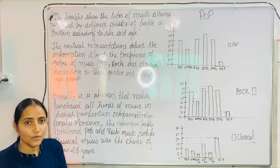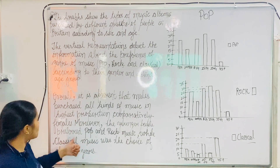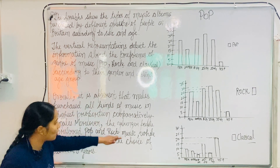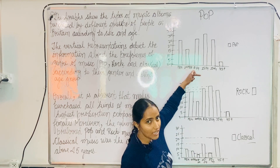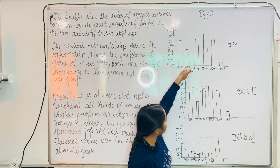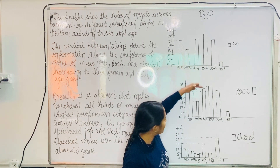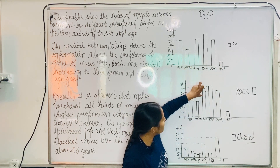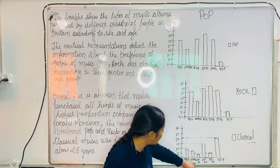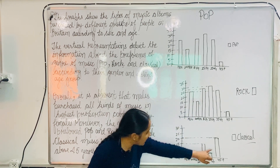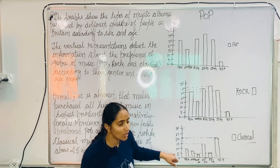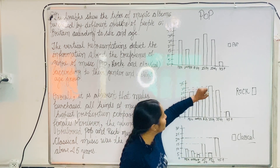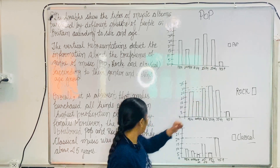The younger age group of 16 to 24 preferred rock and pop music, because for 16 to 24, the classical percentage is very low. So the second overall point: younger people mostly preferred pop and rock music.